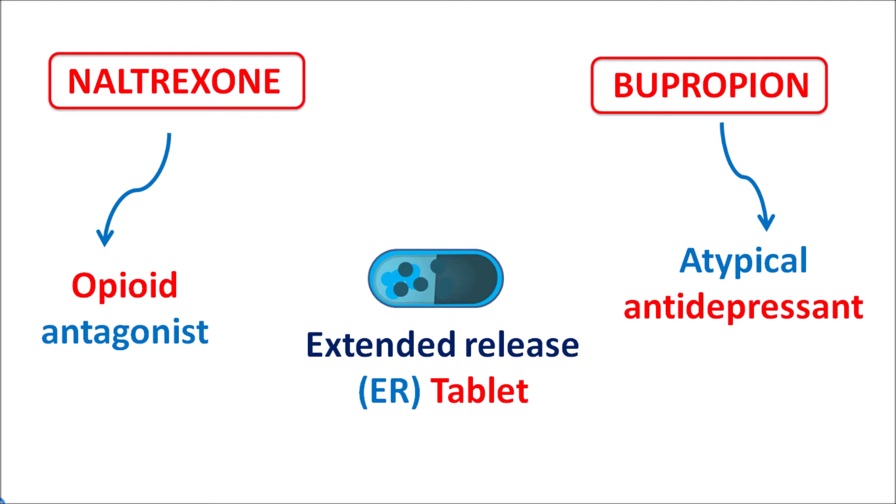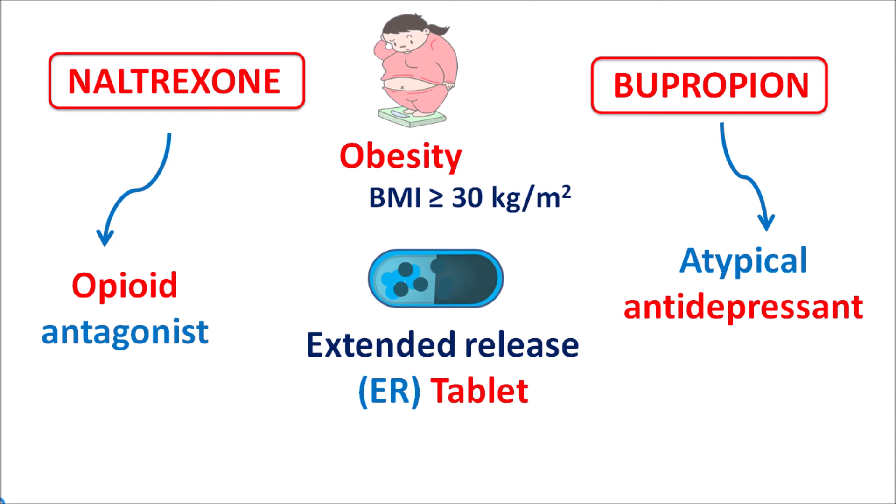The use of this combination is to control appetite within the hypothalamus, so it can be used in the management of chronic obesity. In patients with a body mass index greater than 30 kg/m², this combination can be used. It can also be used for overweight patients with a BMI greater than 27 kg/m² who have associated cardiovascular risk factors.